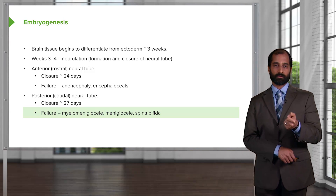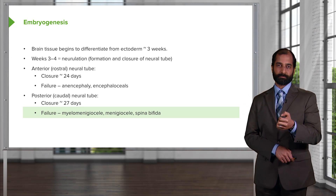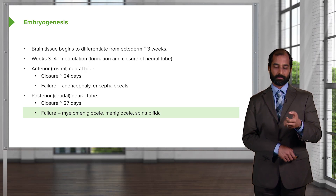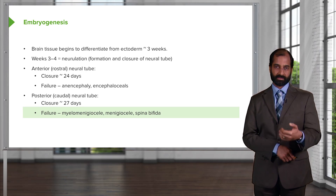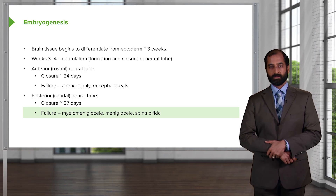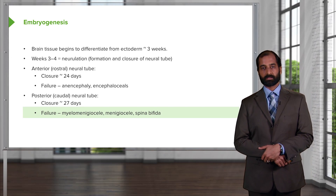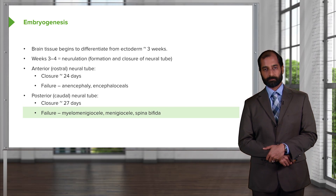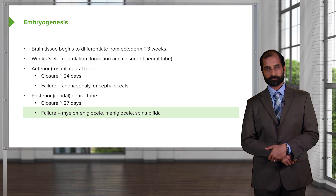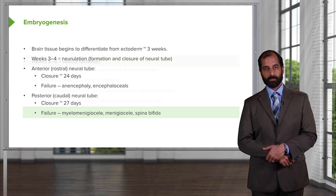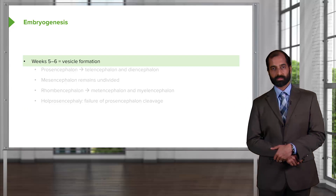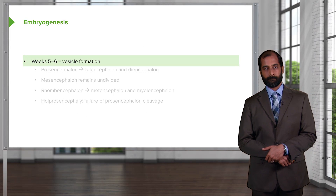By having the spinal cord pulled out in this way, there may be a decreased ability to control one's bladder. Moving on to weeks five and six, we have vesicle formation.